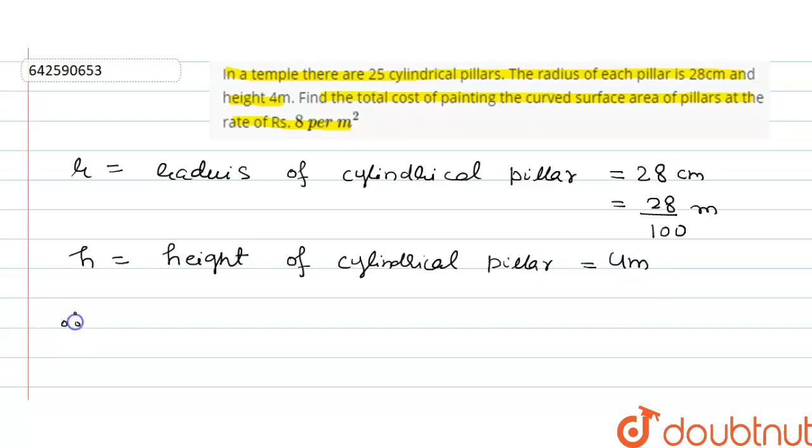So curved surface area of cylindrical pillar will be 2πrh.